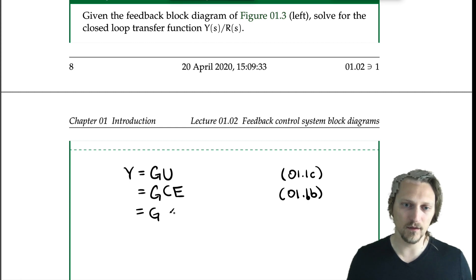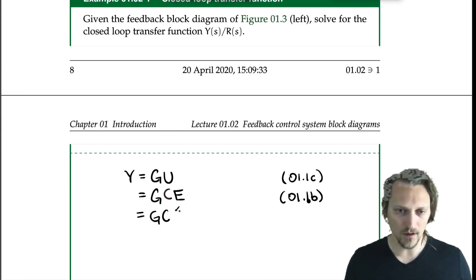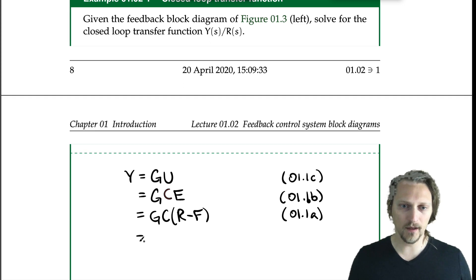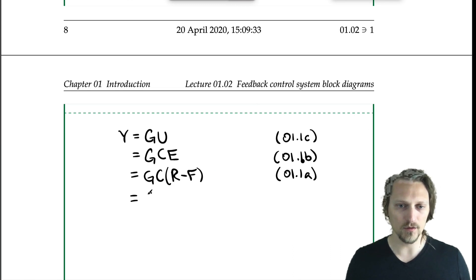G and C are our transfer functions. E is the error. We have an equation for it: E equals R minus F, which is equation 1.1a. Finally we can plug in equation 1.1d for F, which equals HY. So we have GC times R minus F, and F is HY. So that gives us Y equals GC(R minus HY), which is equation 1.1d.